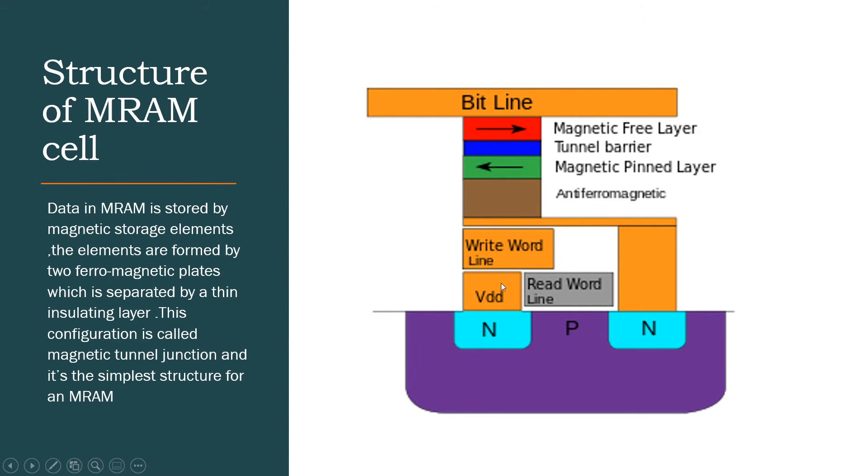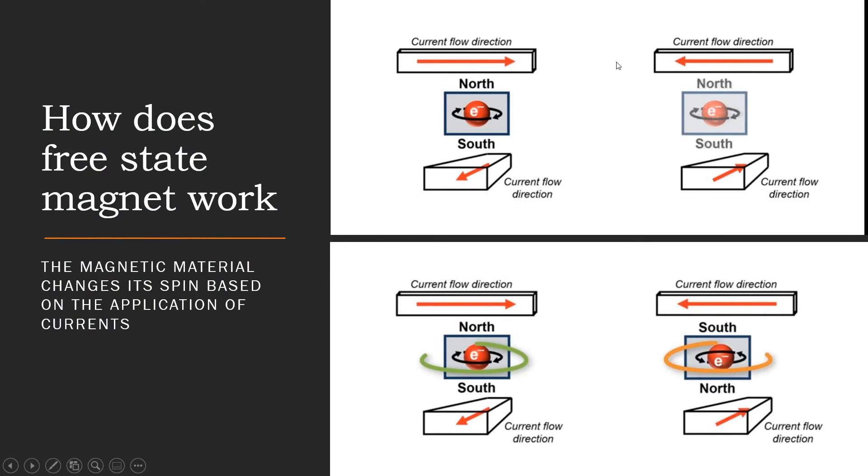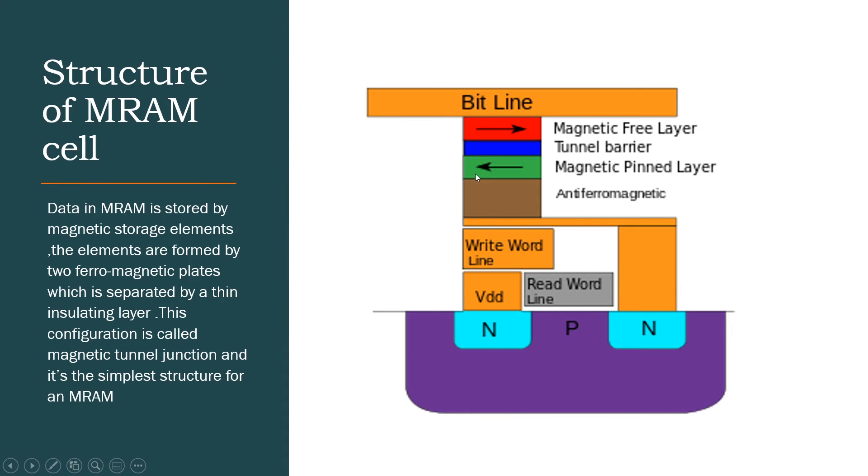The transistor part is NPN. We have something called as read word line which is nothing but a gate, and VDD being our voltage. And a write word line, this is the perpendicular current line which we saw in the previous slide. Data in MRAM is stored by magnetic storage elements. This is two ferromagnetic materials which is separated by an isolating layer. This entire junction is known as magnetic tunnel junction. This is the simplest structure for an MRAM.